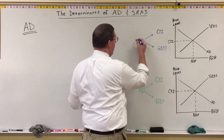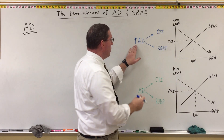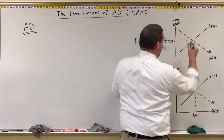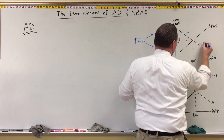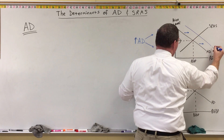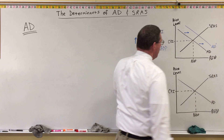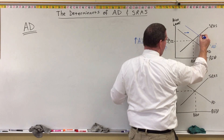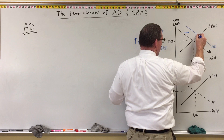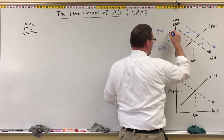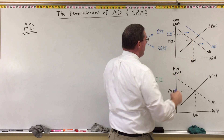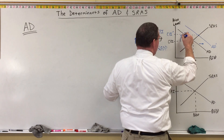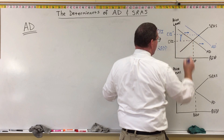When aggregate demand increases, we put an up arrow. An increase in aggregate demand means the aggregate demand curve is going to shift to the right. We'll have AD prime, and you can see our new intersection of aggregate demand with short-run aggregate supply. If we come over to the side, we get CPI prime, and the consumer price index has increased when aggregate demand goes up.